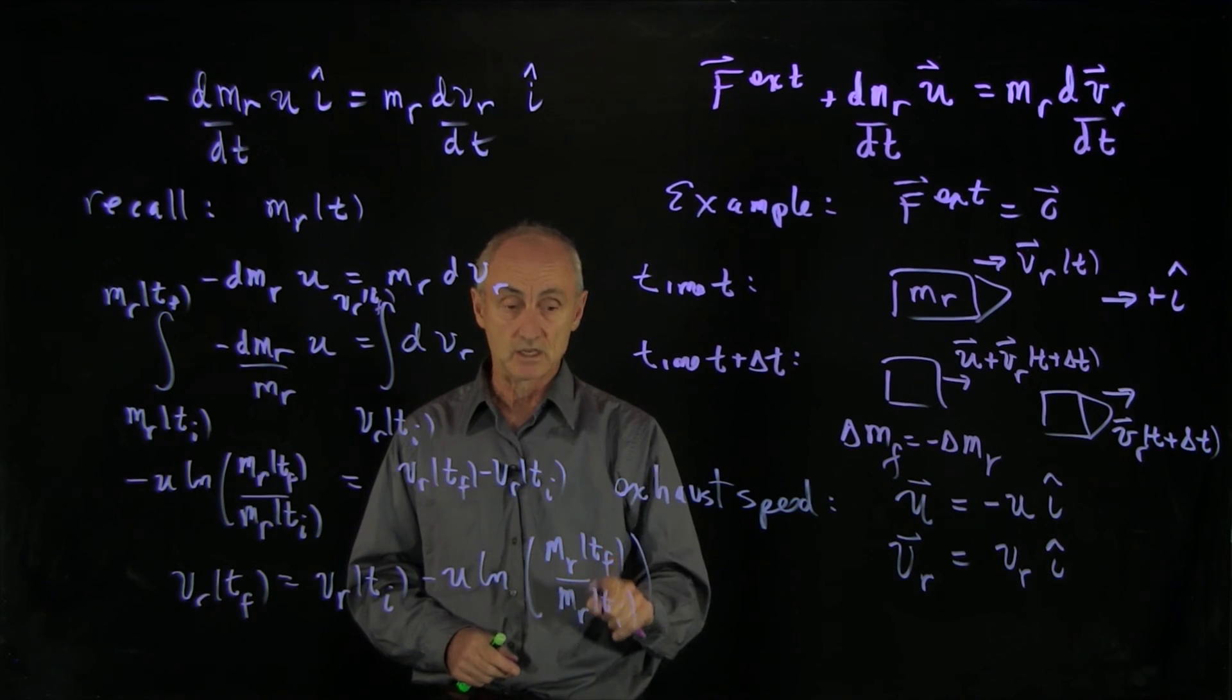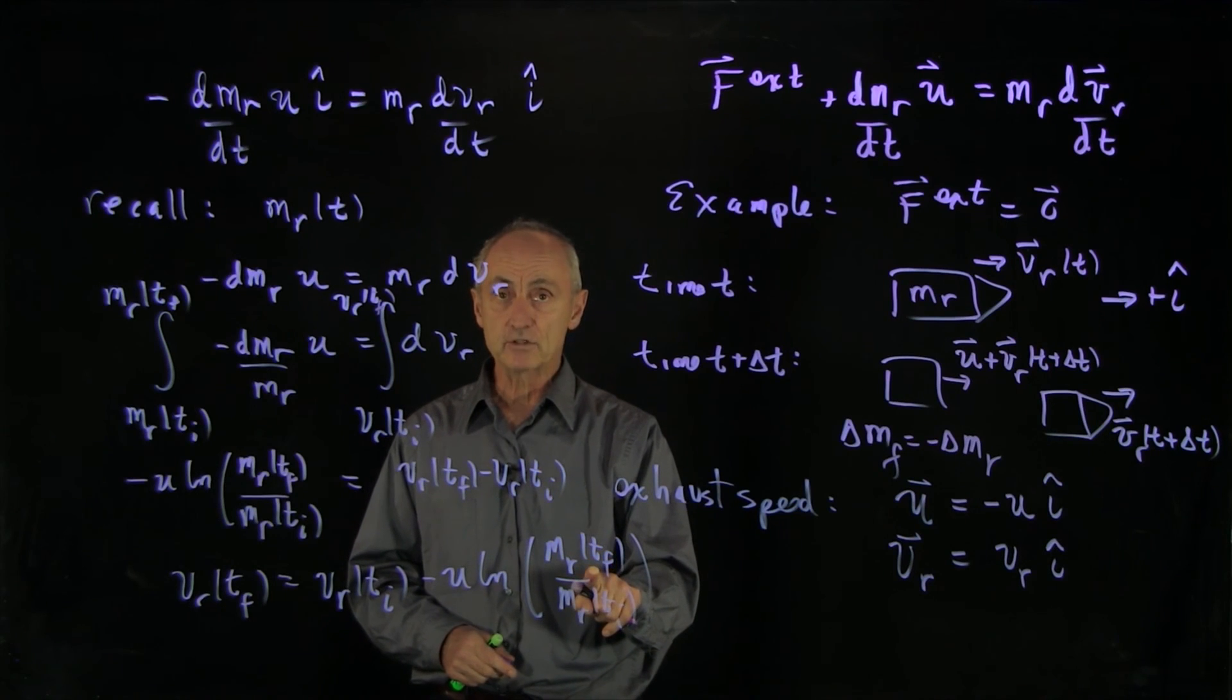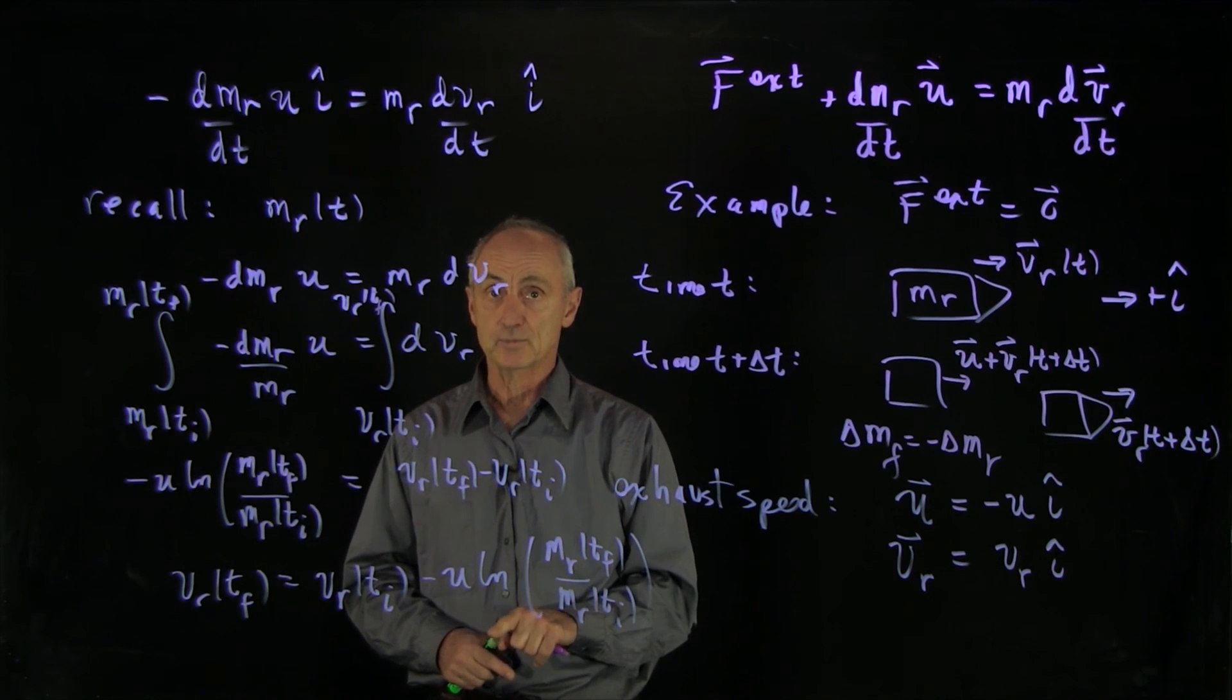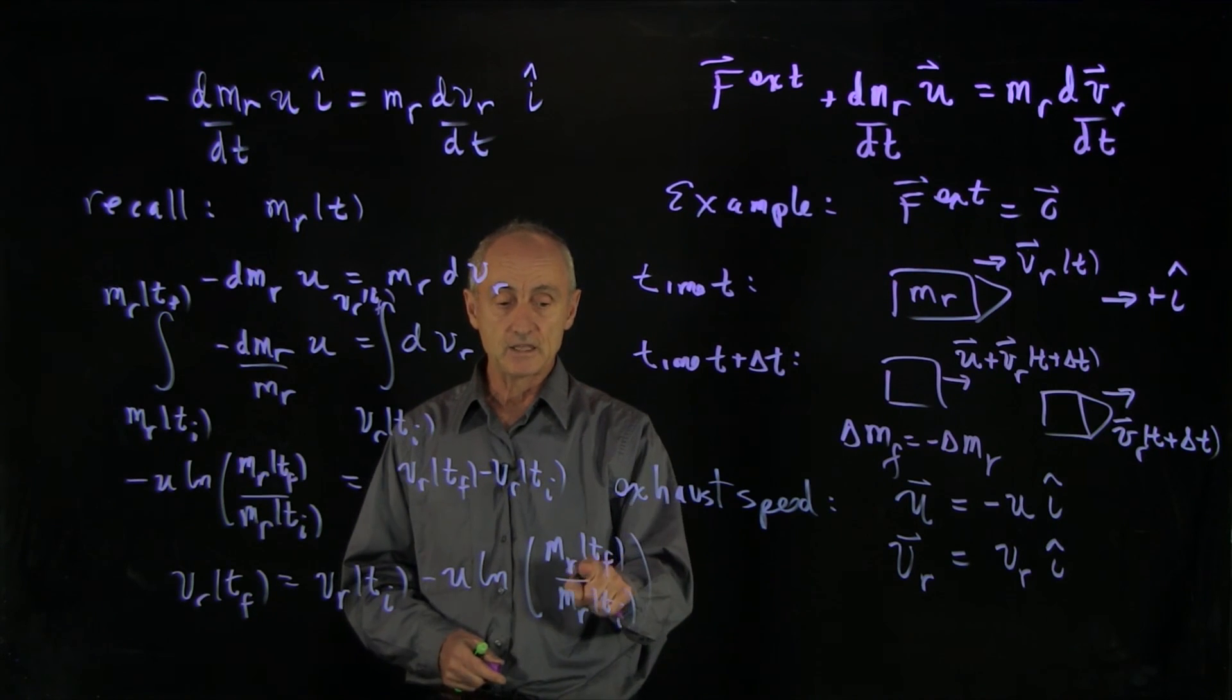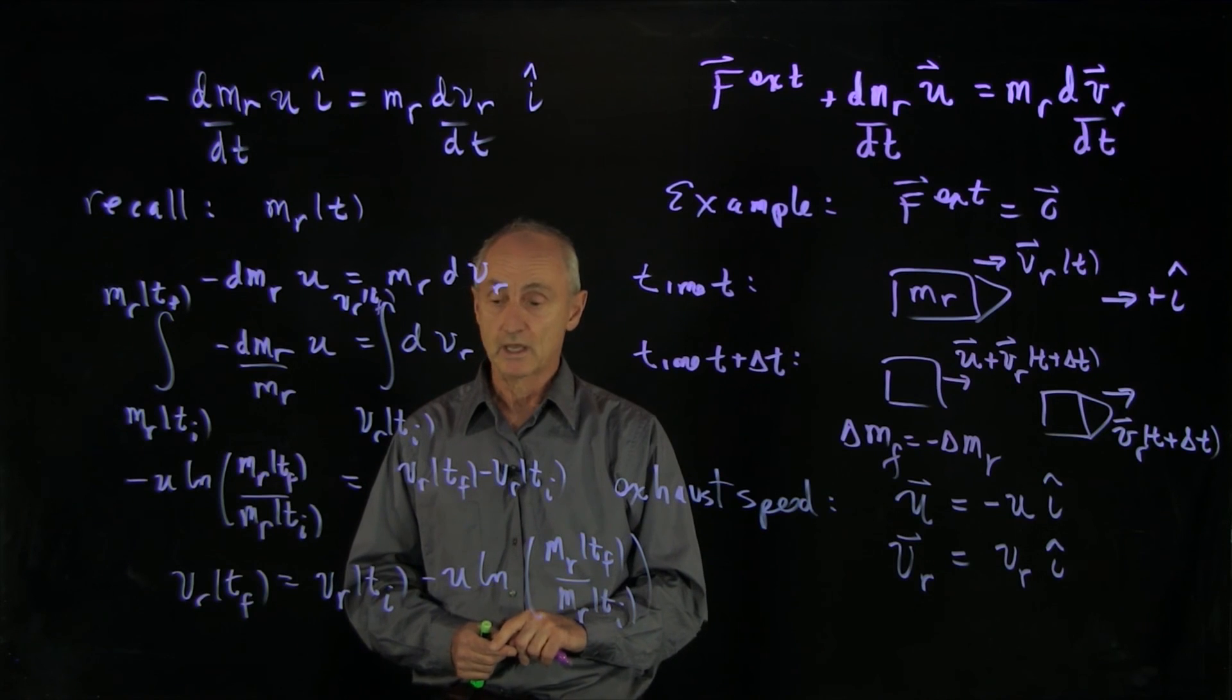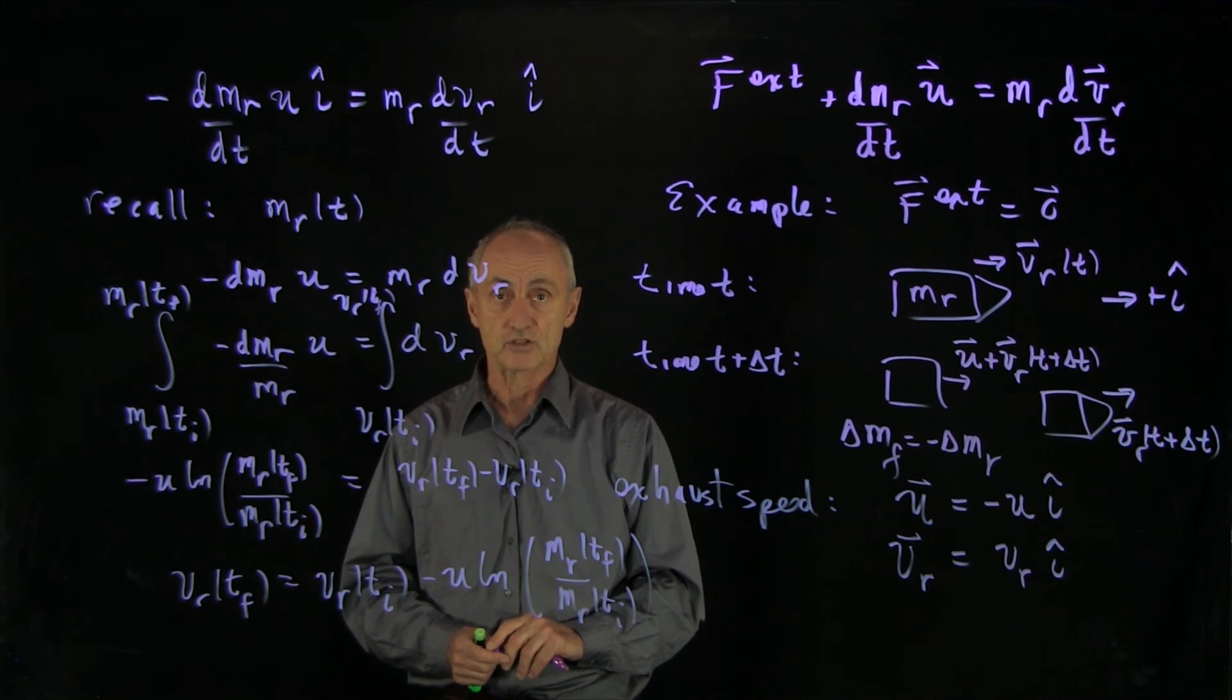unless we have one special case in which our final time is when all the fuel has been burned. And our initial time is the rocket with all the fuel there. And then this ratio is a known ratio. And you can look at a variety of different examples for that.